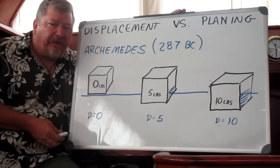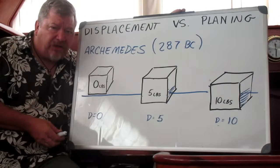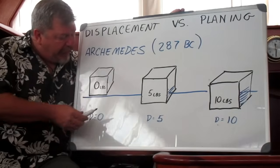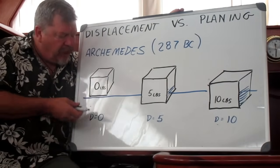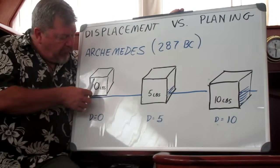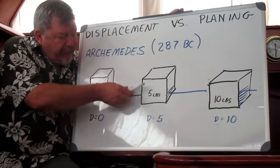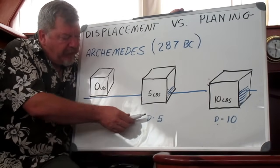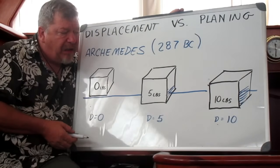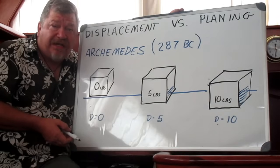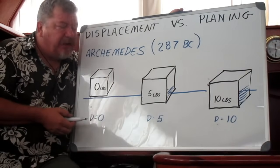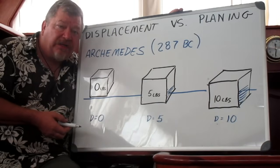Any discussion of displacement has to include Archimedes' principle. Archimedes was an engineer and physicist amongst other things. He was born back in 287 BC and he was the first one to claim that any object thrown into water or any other liquid would displace exactly the same amount of weight as the weight of the object. So if it weighed 5 pounds it would shoulder aside exactly 5 pounds of water and come to an equilibrium. Every boat sitting still doesn't generate lift, so every boat sitting still obeys Archimedes' principle and displaces the same amount of water as the weight of the vessel.